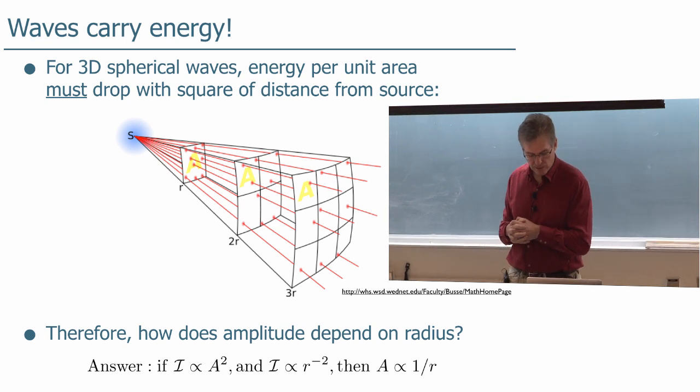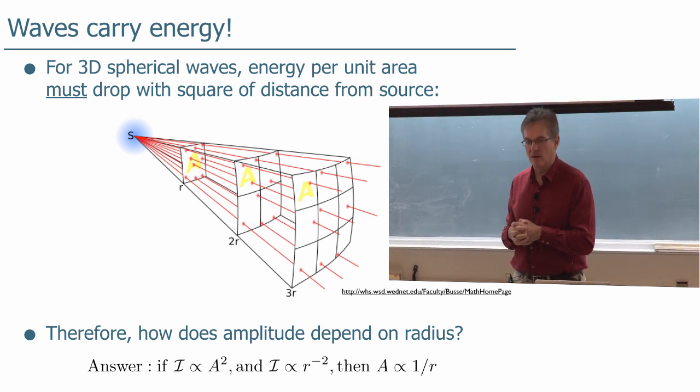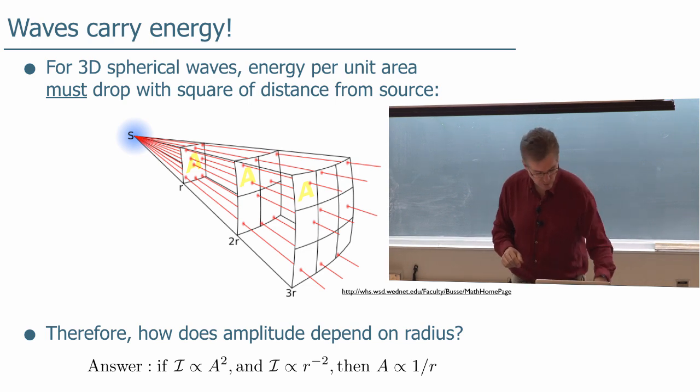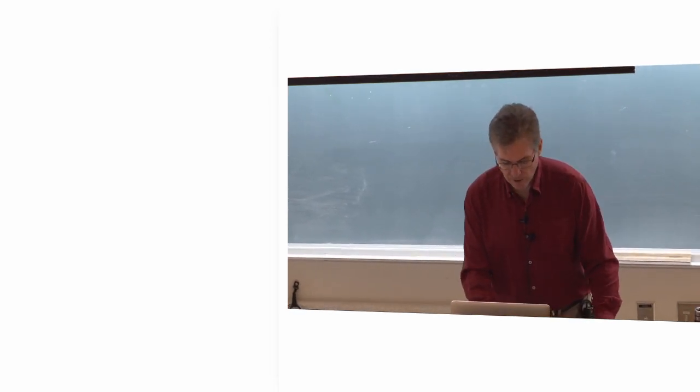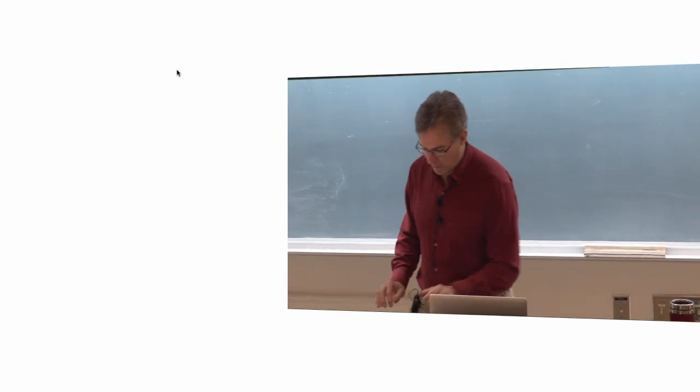Then you can conclude that A is proportional to one over R. Now if you're not comfortable with dealing with proportionality equations, we can write it down a little bit more directly like this.